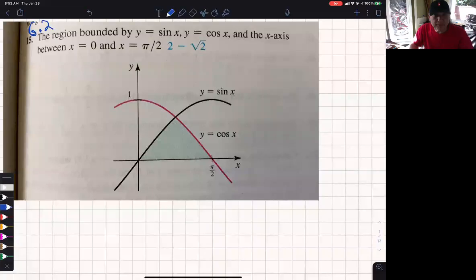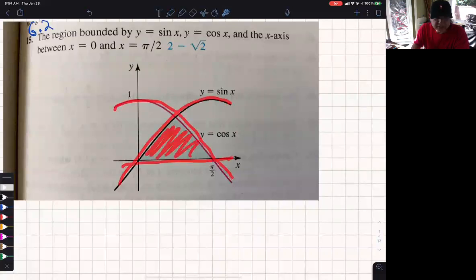So this is 6.2 number 15, and you're asked to find the area bounded by three functions: the sine of x, the cosine of x, and the x-axis.